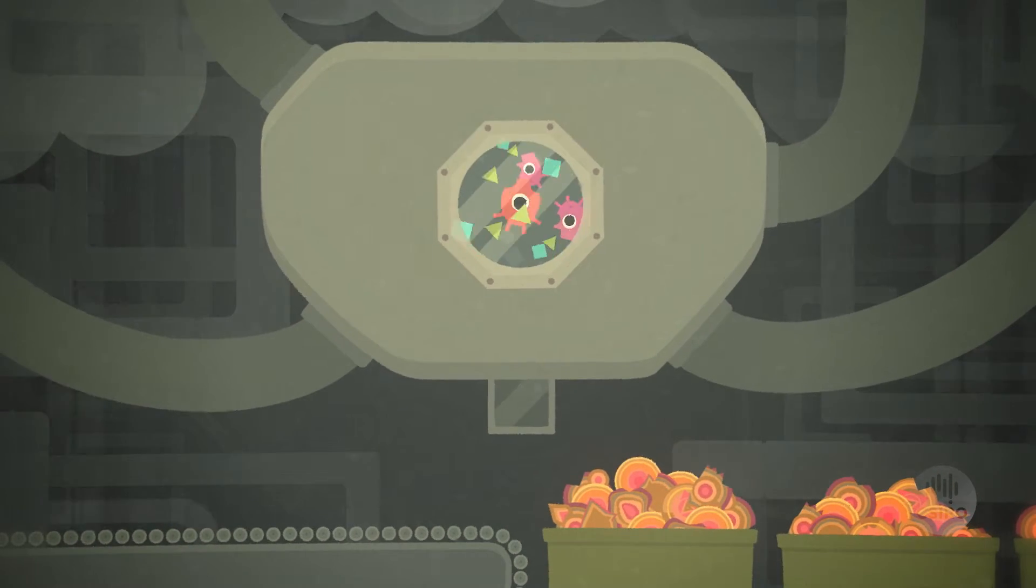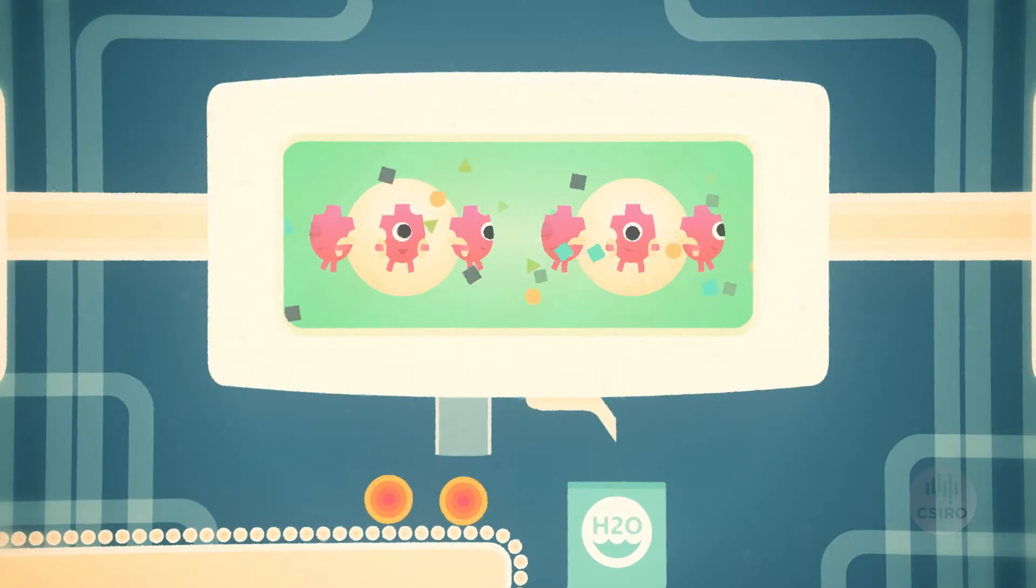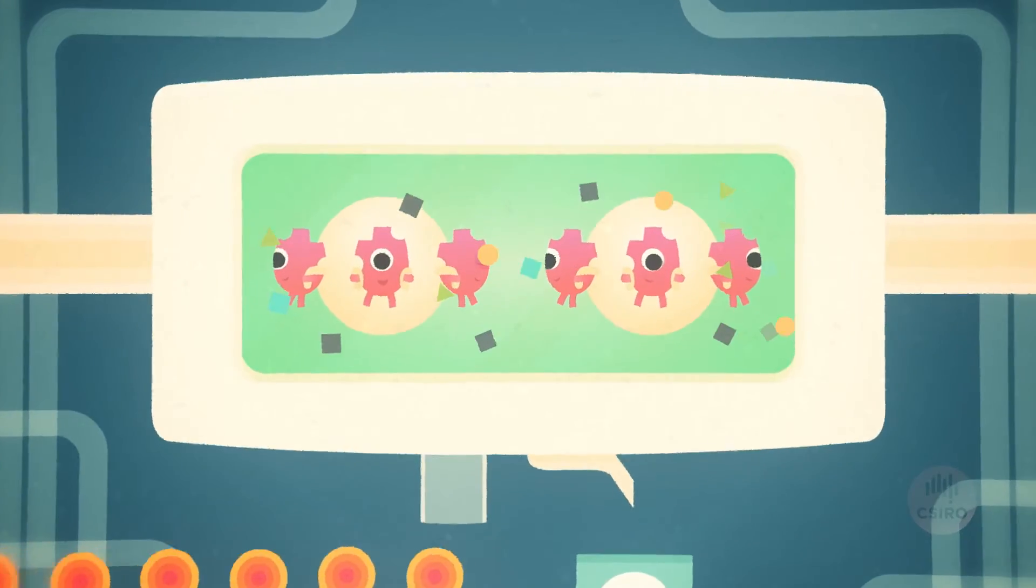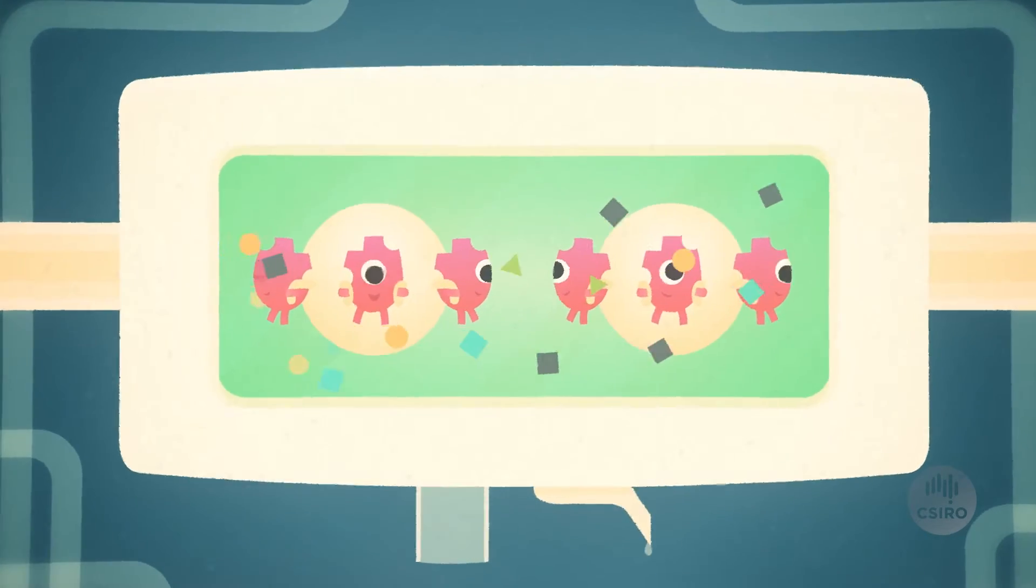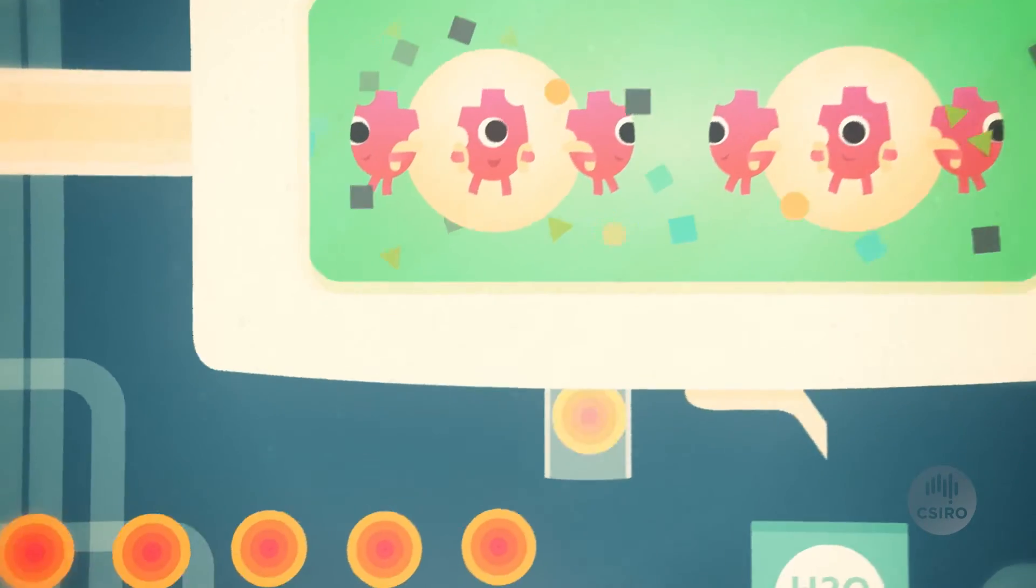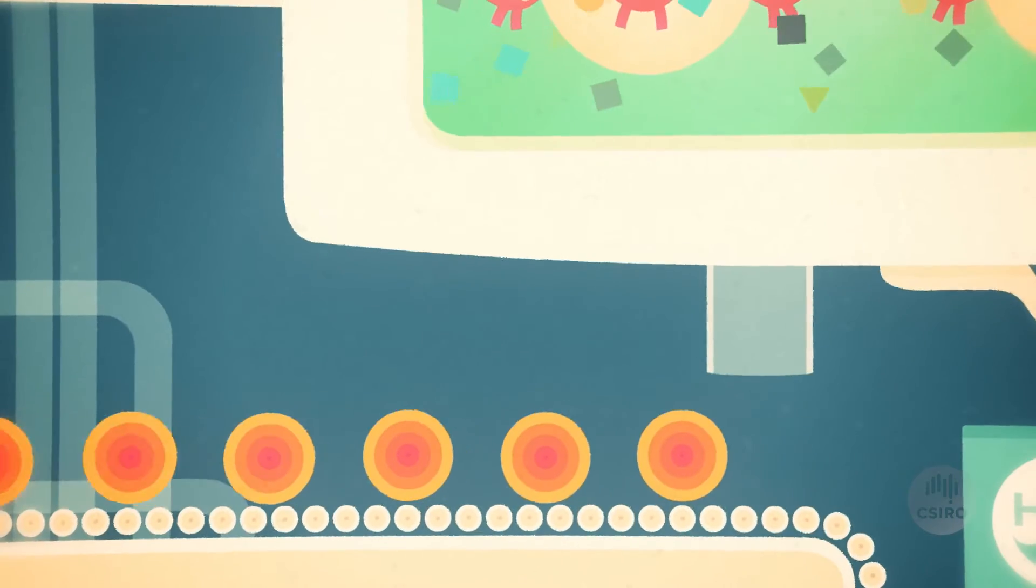CSIRO has developed an innovative new process that brings order to enzyme technology. With this new technology, the production line can guarantee exact outcomes, producing more from less.